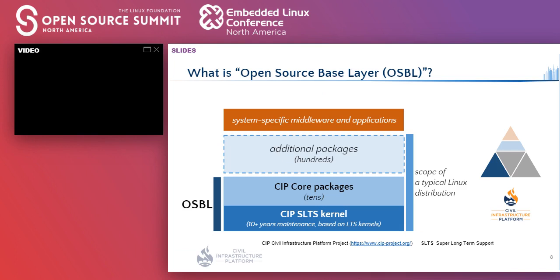OSBL consists of the CIP SLTS kernel and CIP core packages. SLTS stands for super long-term support, and we aim to maintain SLTS kernels for 10-plus years. CIP core packages contain only dozens of carefully selected packages, which will likewise be maintained long-term. Users will notice that more packages — say hundreds — are needed to develop real systems or devices. While CIP provides OSBL as commonly used building blocks, those additional packages should be added by users via Linux distributors.